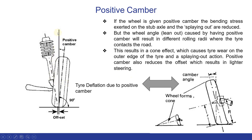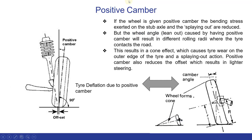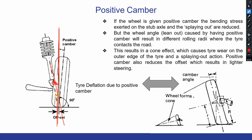Lighter steering occurs because when the kingpin axis and tyre axis meet at a point, the offset is zero. When the offset is reduced, lighter steering is produced, whereas a larger offset results in heavier steering. The angle formed between the vertical and the wheel centerline when viewed from the front is called the camber angle. When the wheel tilts outward at the top and inward at the bottom, it is positive camber; the opposite is negative camber. Camber angle is expressed in degrees.